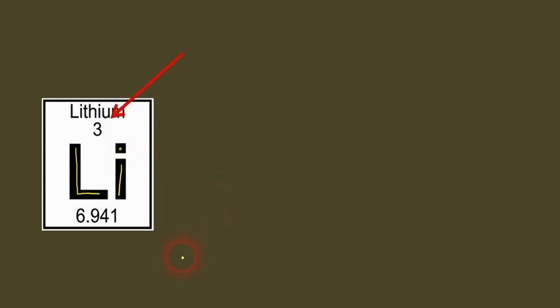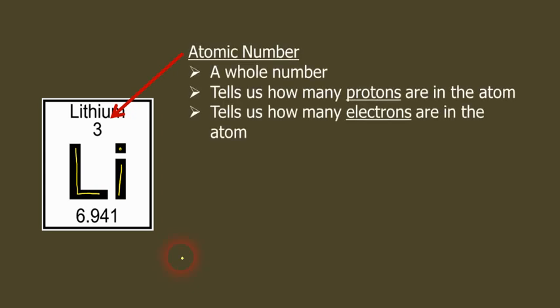And it's going to be featured quite prominently on the periodic table square. I want you to notice that there's a number up there. There is a whole number and that's called the atomic number. So it's not a decimal number, it's a whole number. It's called the atomic number. And that number right there tells us how many protons are in the atom. It also tells us how many electrons are in that atom.